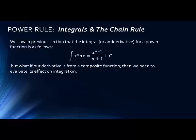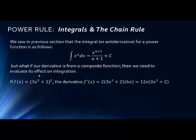But what happens if our derivative is from a composite function — specifically a function inside of a function? Here we have a power function, something raised to the power of 2, but inside is also another function. The derivative f′(x), if this is f(x), equals 2 times (3x² + 2) times the derivative inside, which is 6x from the 3x². Or we get the final answer of 12x times (3x² + 2).